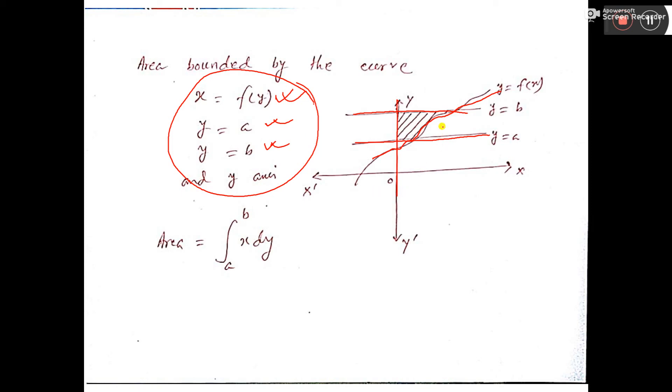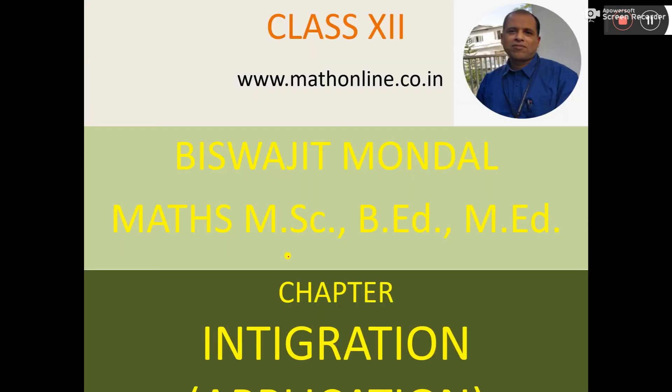So the area formula will be a to b x dy. That one was y dx, this one will be x dy. So these two are the formula of this exercise. That's all, that's all.